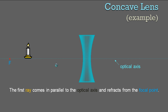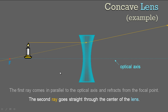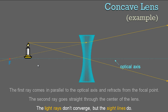Here's an example. The first ray comes in parallel to the optical axis, hits the center line, and then diverges through the focal point. The second ray goes straight through the center of the lens and continues straight — not bent at all. The light rays don't converge, but the sight lines do. Those dashed sight lines are directed back towards the focal point, and that's where they meet.